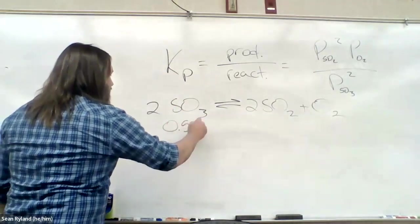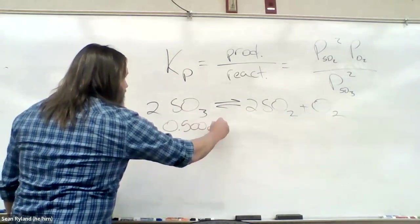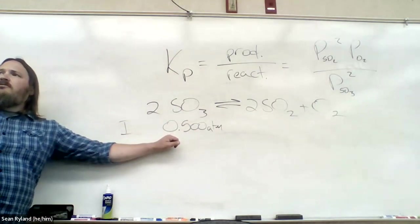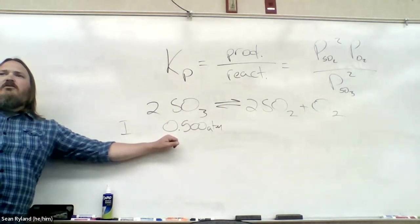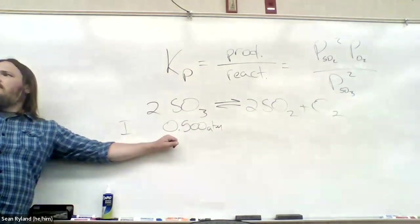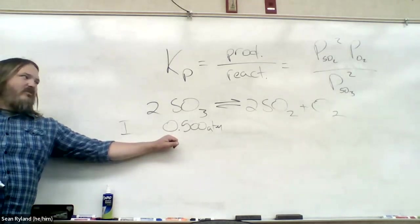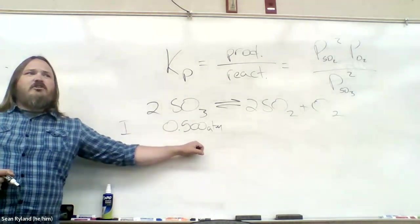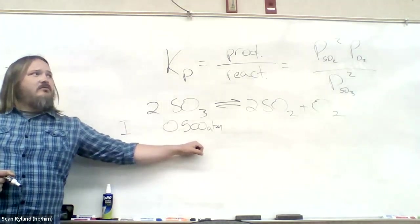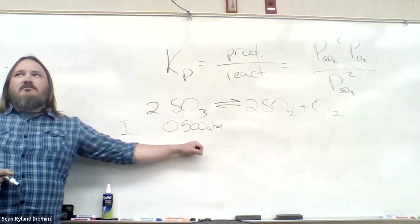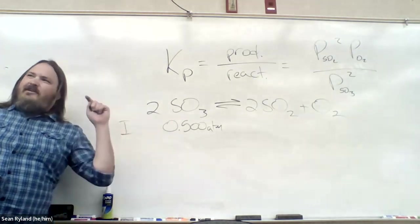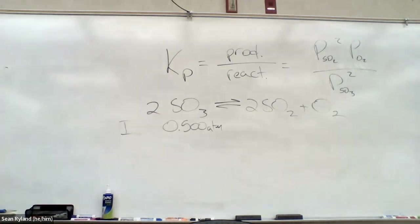So we had initially 0.500 ATM. Do we need to put this in moles for this to work? We've done it in molarity units before, and we've used moles before. Can we just use atmospheres, or do we have to do a conversion first?